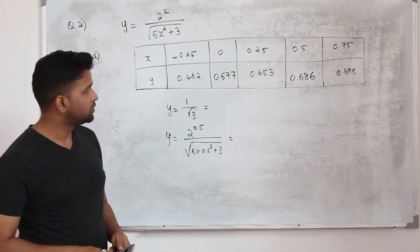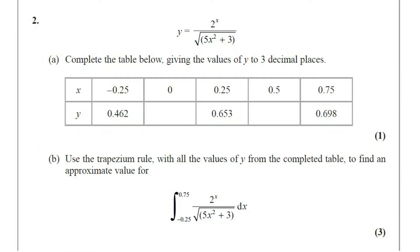Let's move on to part B now. In part B, use the trapezium rule with all the values of y from the completed table to find an approximate value for the given definite integral. The question carries three marks.